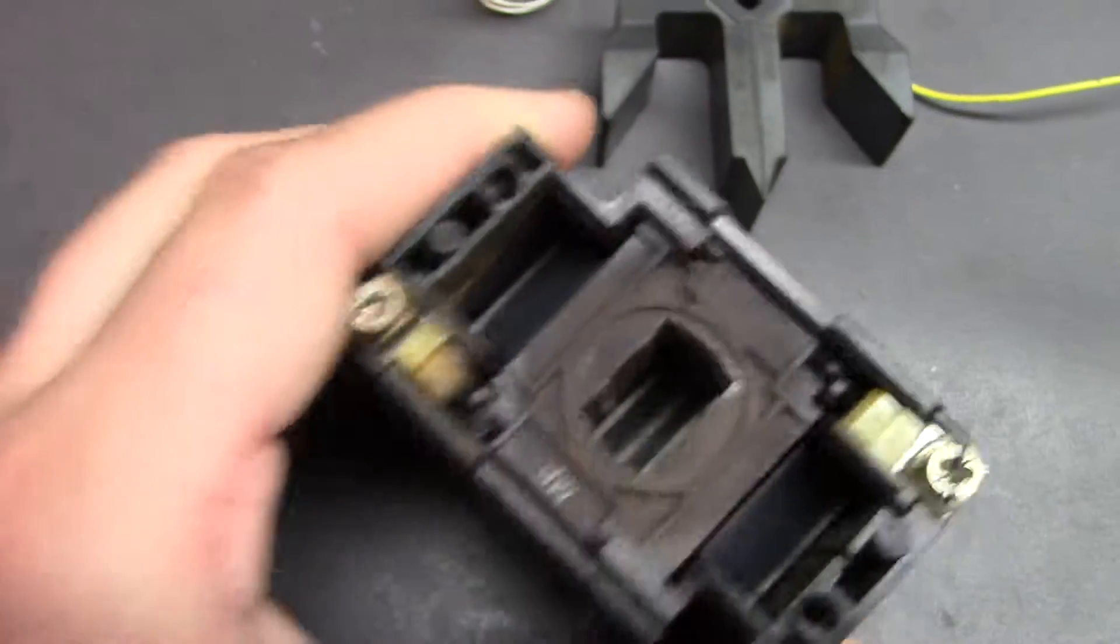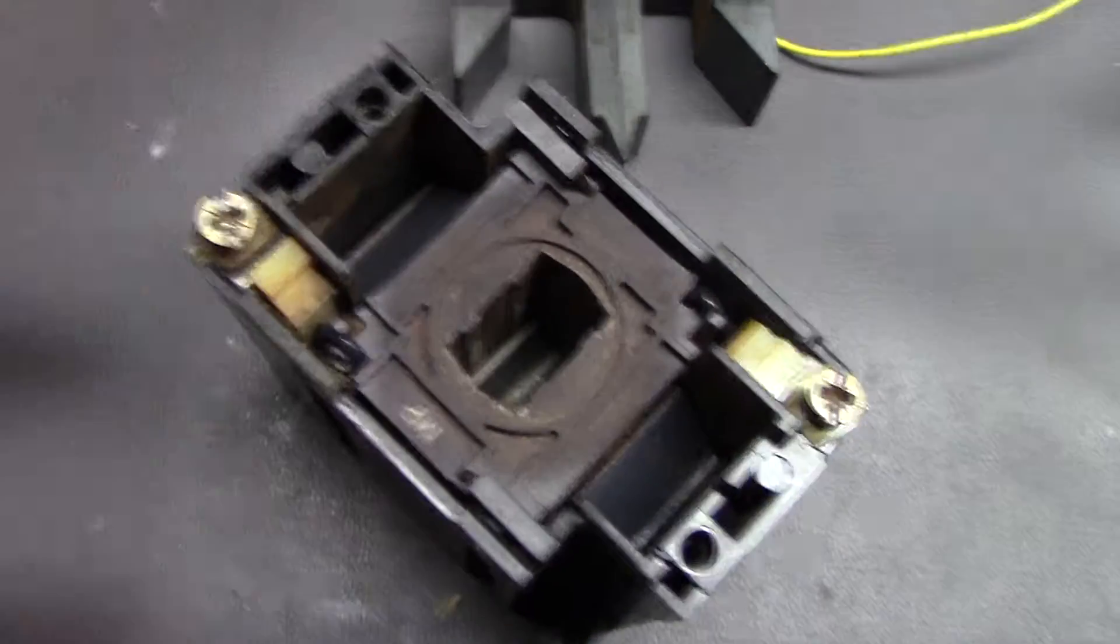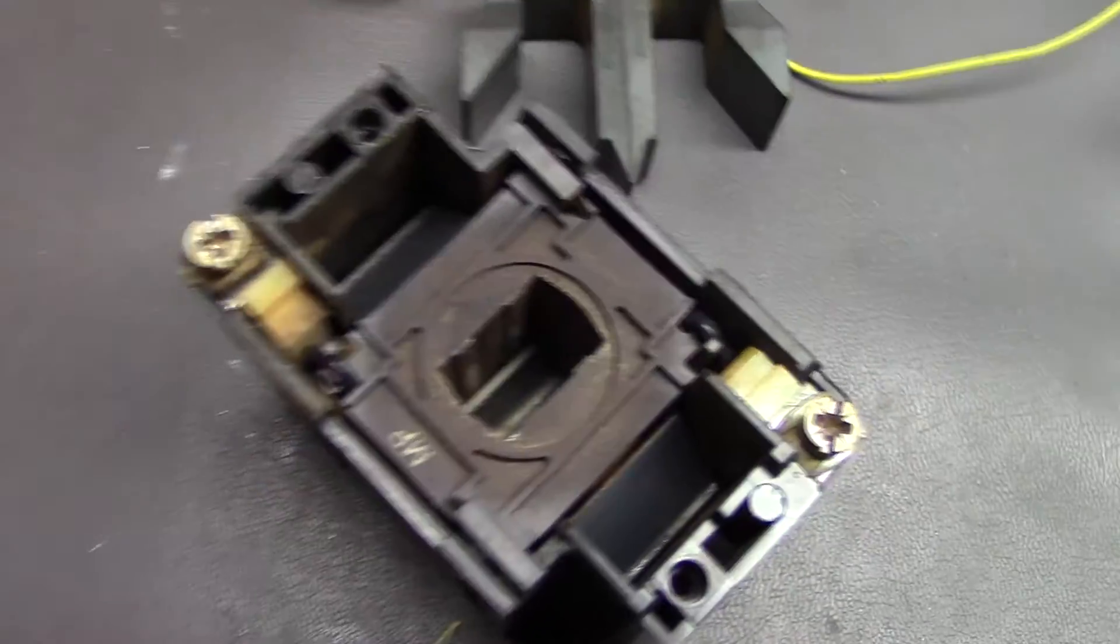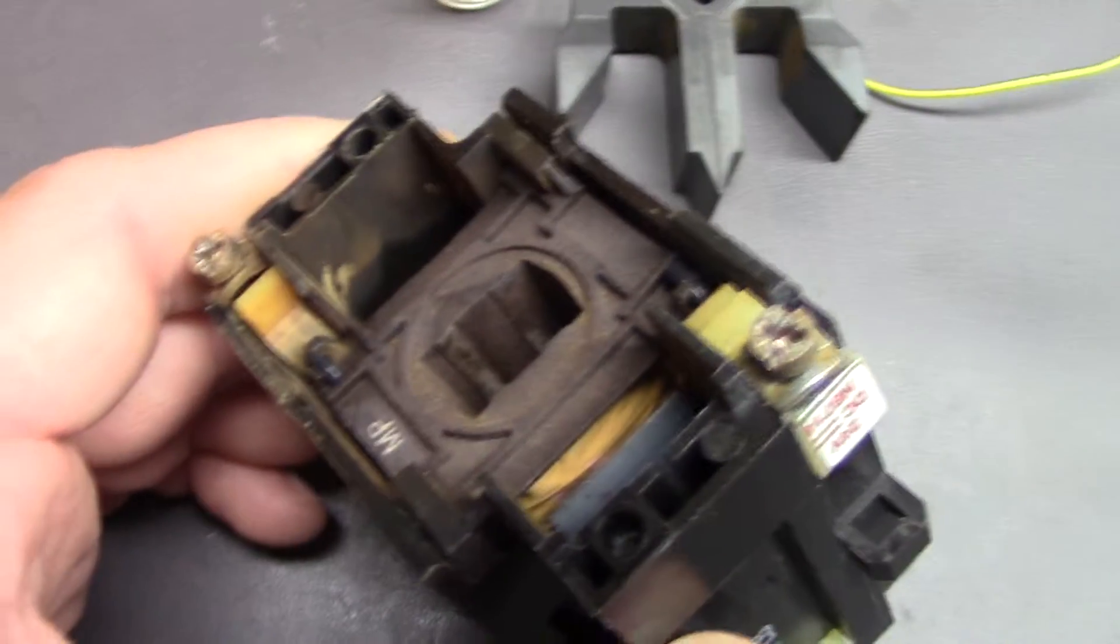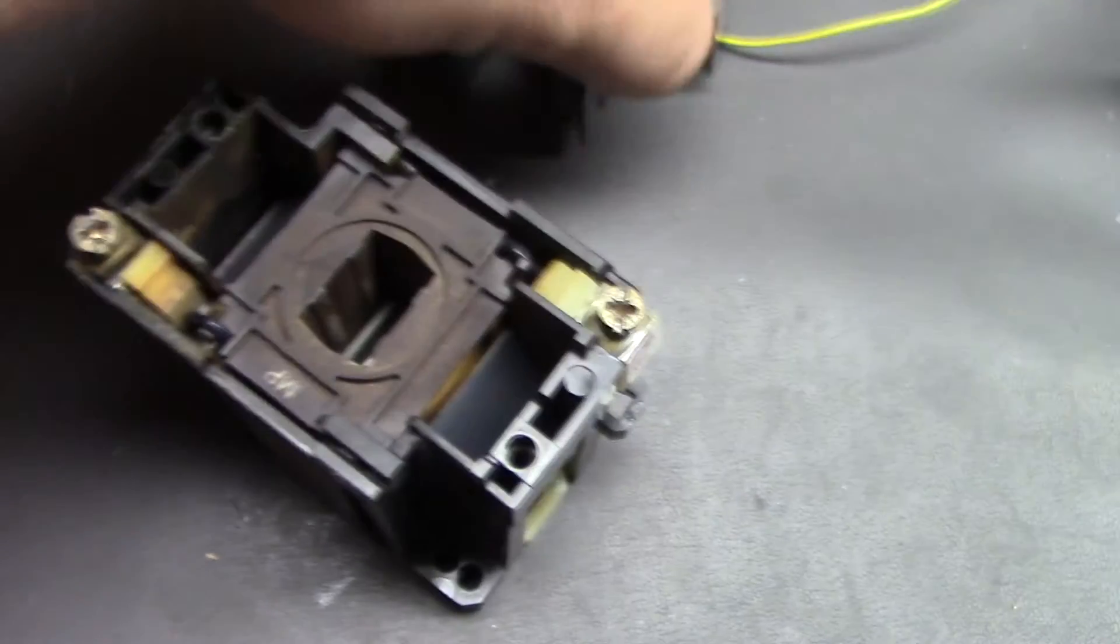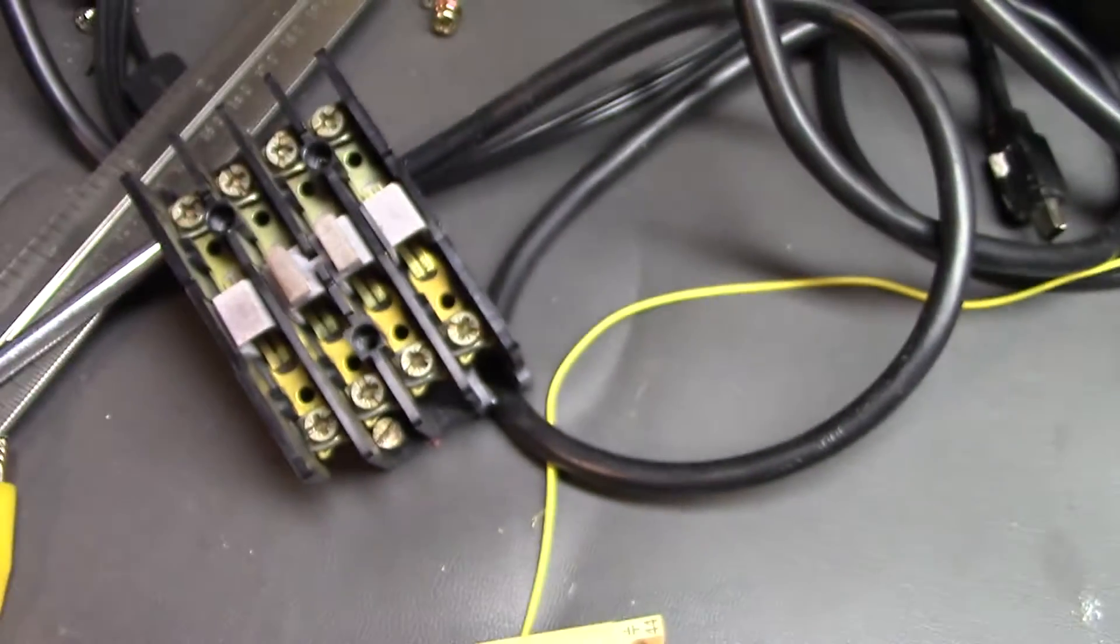And all that is is a big chunk of ferrous material in the middle, and then you have all this magnet wire that's just wrapped around it. And when that's energized, it creates an electromagnet, just kind of like the nail and magnet wire you may have done in school or other experiments. And when that magnetic field is created, it sucks this guy down, which then draws these down, and that's what makes contact. Very simple.